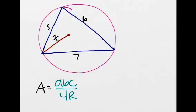We know that the side lengths are equal to 5, 6, and 7, and the circumradius is equal to 7.5.